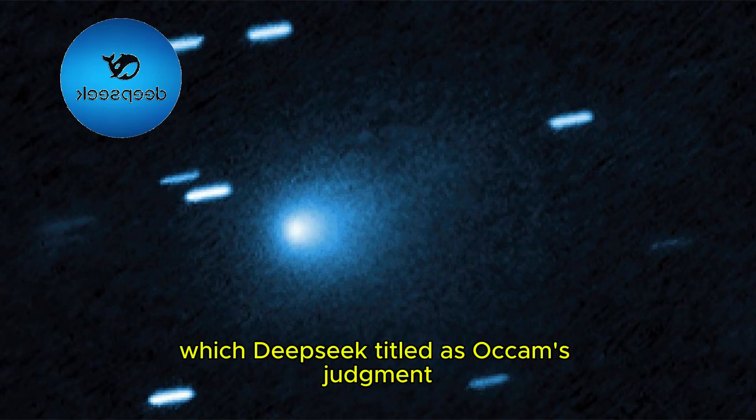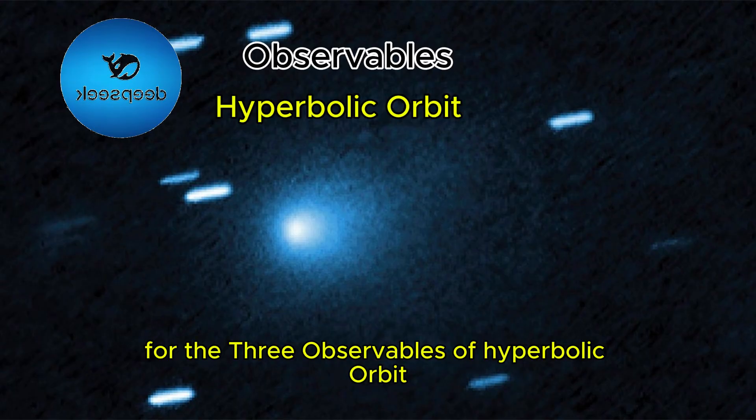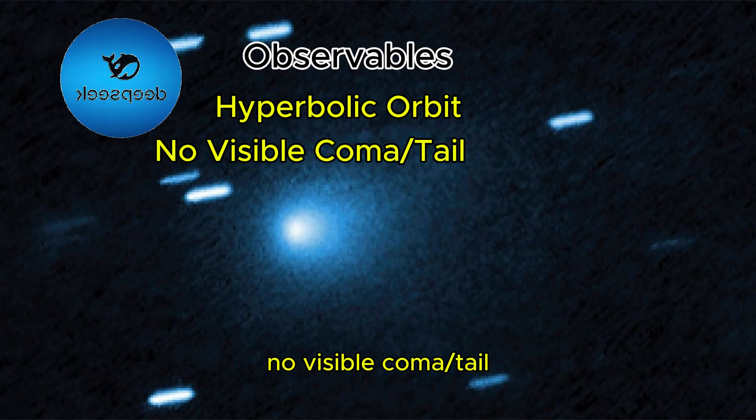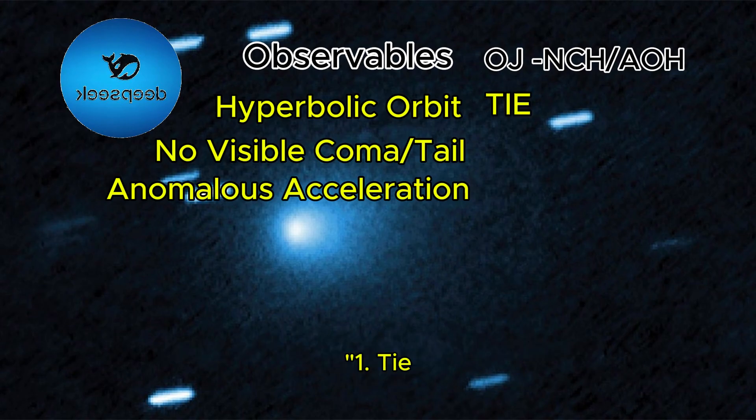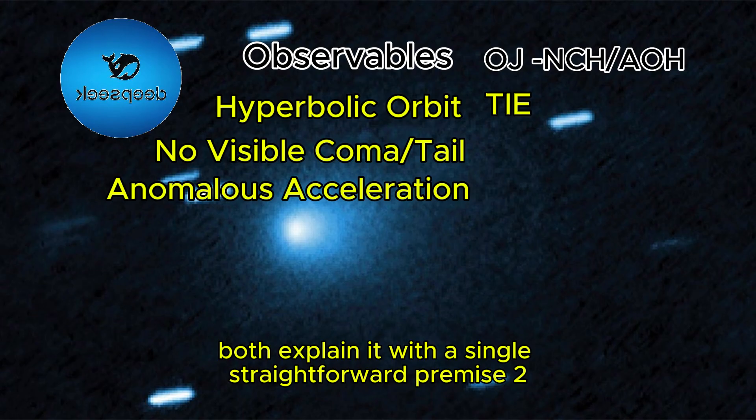The fourth column which DeepSeek titled as Occam's Judgment for the Three Observables of Hyperbolic Orbit, No Visible Coma Slash Tail and Anomalous Acceleration for both Natural Comet and Artificial Origin Hypothesis were, quote: 1. Tie. Both explain it with a single, straightforward premise.